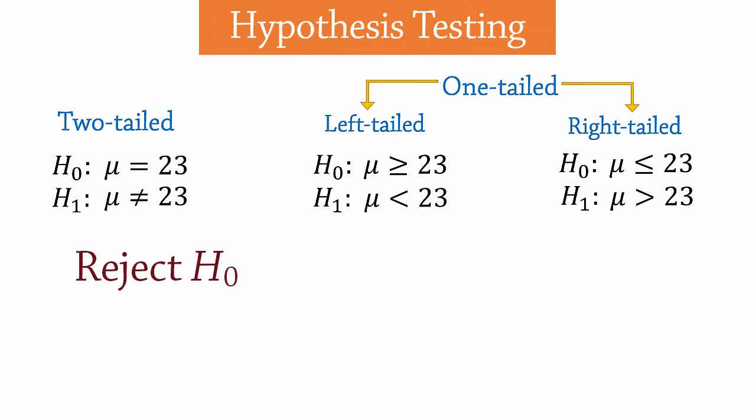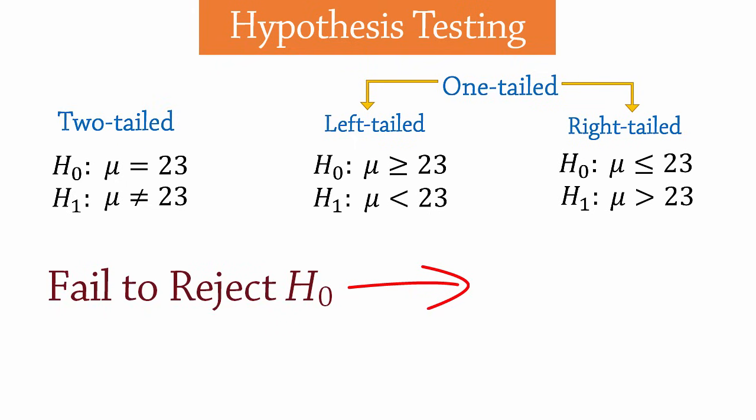If we reject the null hypothesis, we will say we have enough evidence to support the alternative or to say that the alternative is true. If we don't reject the null hypothesis, we will say we don't have enough evidence to support the alternative. We usually don't say that the alternative is not true. We only say that we don't have enough evidence to support it.